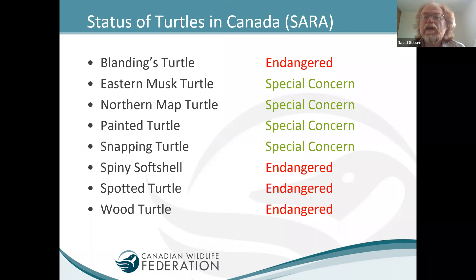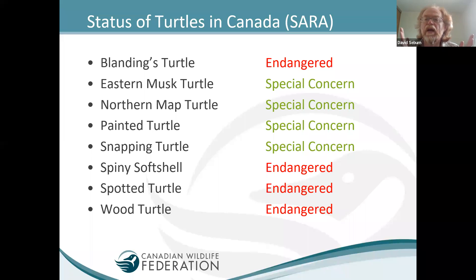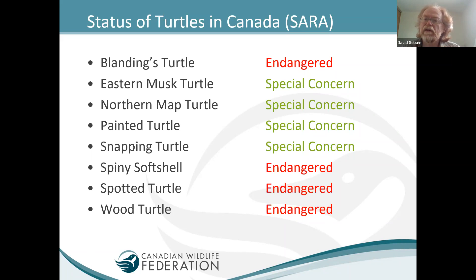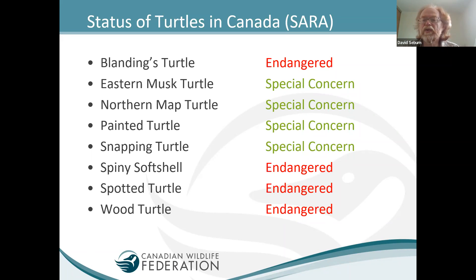All eight species of native turtles in Canada are now listed as species at risk by the federal government under the Species at Risk Act, or SARA. Because of this, observations of turtles are valuable to help document the distribution of species and trends on the landscape. All our species of turtles are at risk and they need our help.